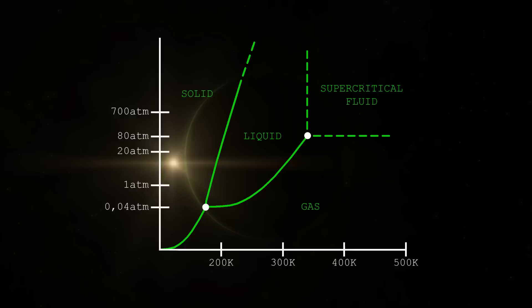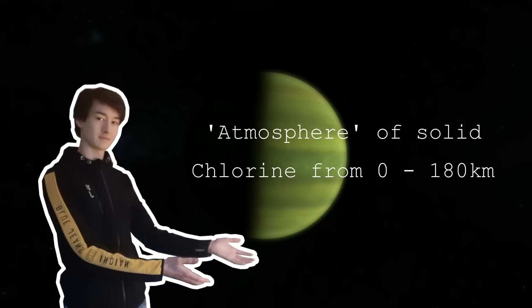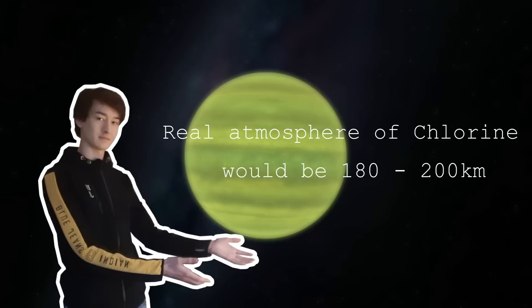But from what I gathered, chlorine would be a solid for the majority of what KSP states is the actual atmosphere of Joule. And it would start to go from a liquid to a gas between 180 and 200 kilometers from what we call the surface. So that is right at the edge, basically.